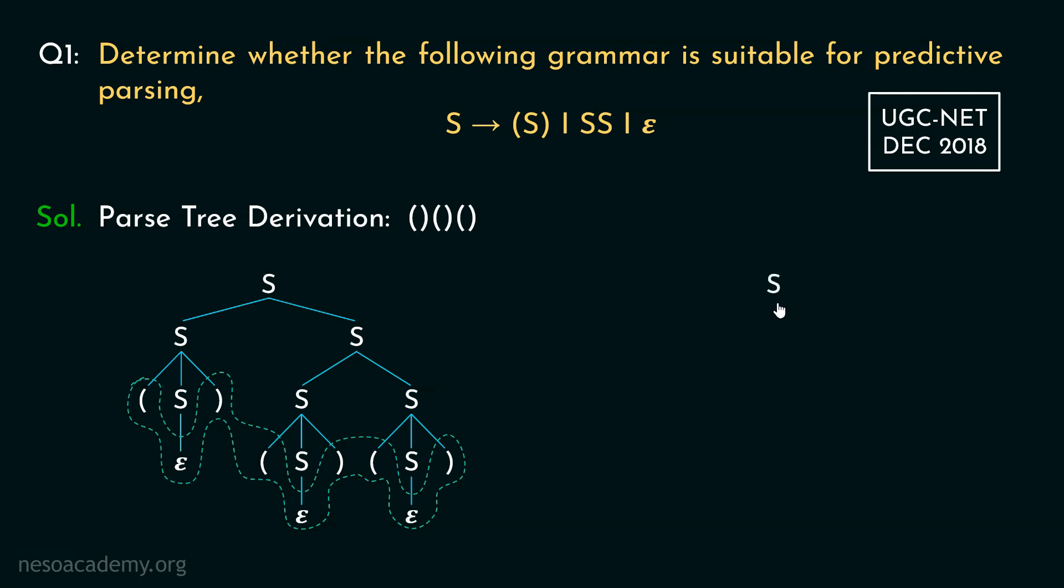We will again begin with the start symbol S. Now applying the second rule, from this S we will derive SS. Now this time, instead of this S, let's derive SS from this S.